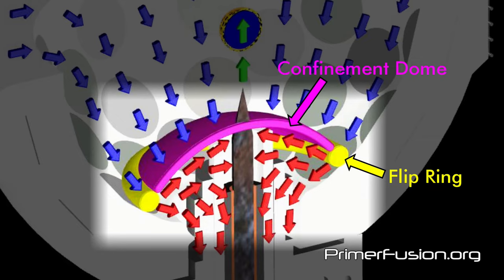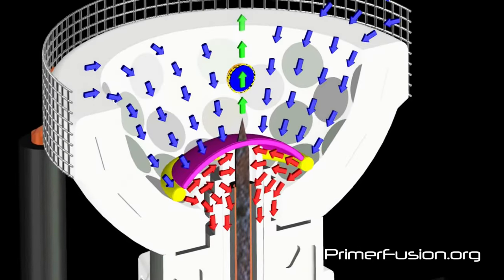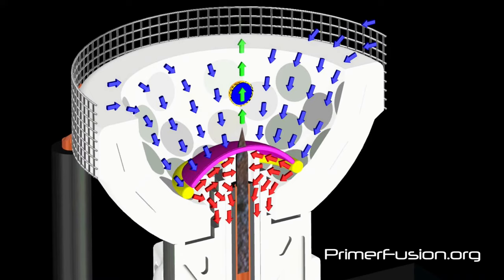As the blue arrows indicate, magnetic particles above the confinement dome flow down to the flip ring, where they flip magnetically and go under the confinement dome. Then the particles are held under the confinement dome until enough energy is applied to force them up through the top of the confinement dome.